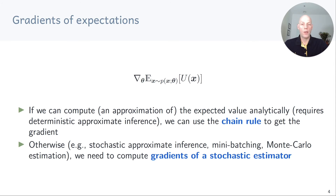If we can compute the expectation or an approximation thereof analytically, we may be able to use the chain rule to get the gradient. But otherwise, for example if we need any kind of sampling to compute the expected value or if we want to do mini-batching, we need to compute gradients of a stochastic estimator. And this is what I want to focus on today.